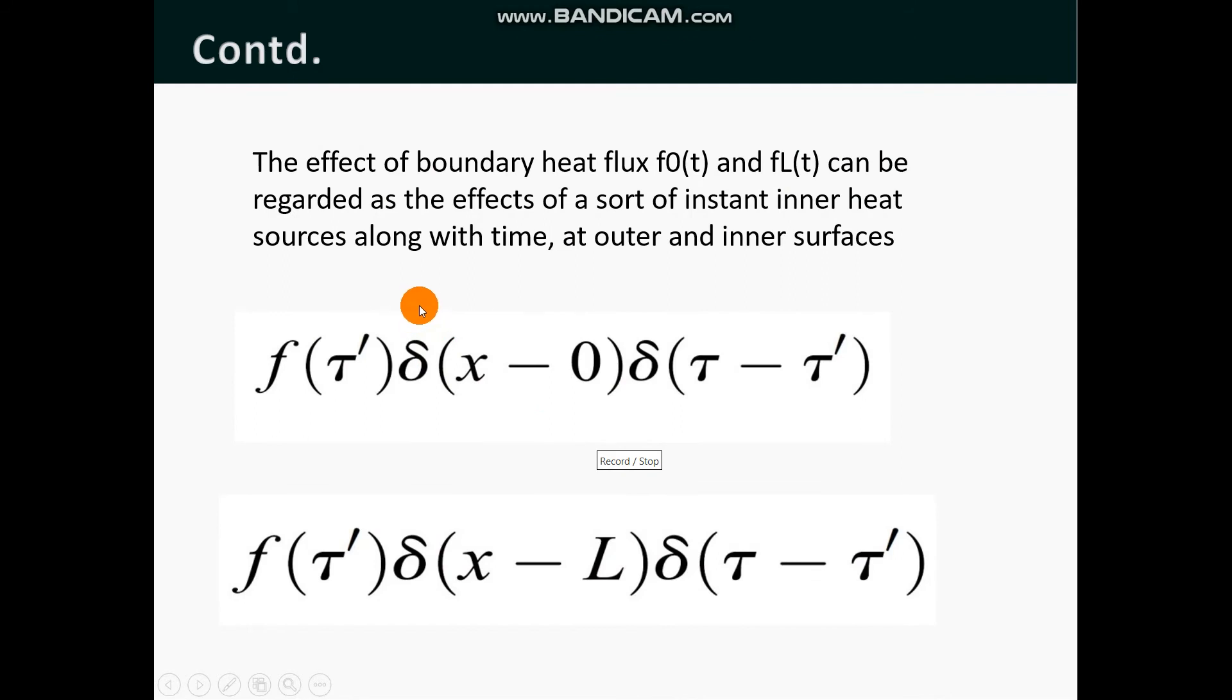The effect of boundary heat flux F0(t) and FL(t) can be regarded as the effects of instant inner heat sources along with time at outer and inner surfaces. Here the Dirac delta function in the first equation represents that the heat source is at x = 0 and in the second function represents that the heat source is at x = L.